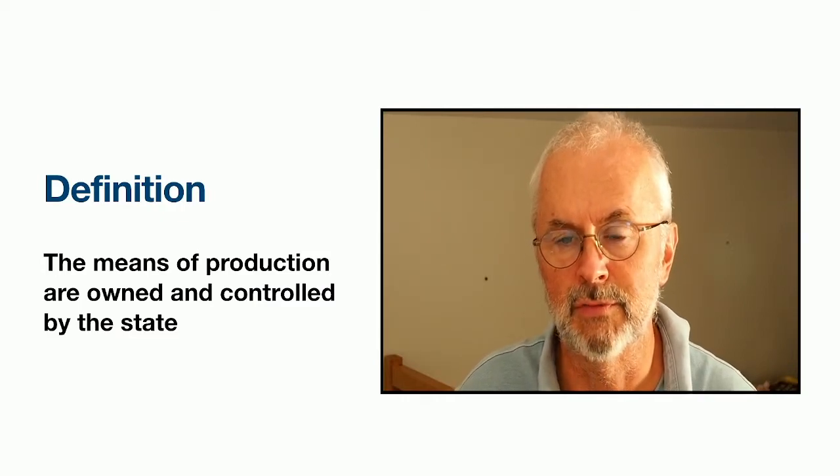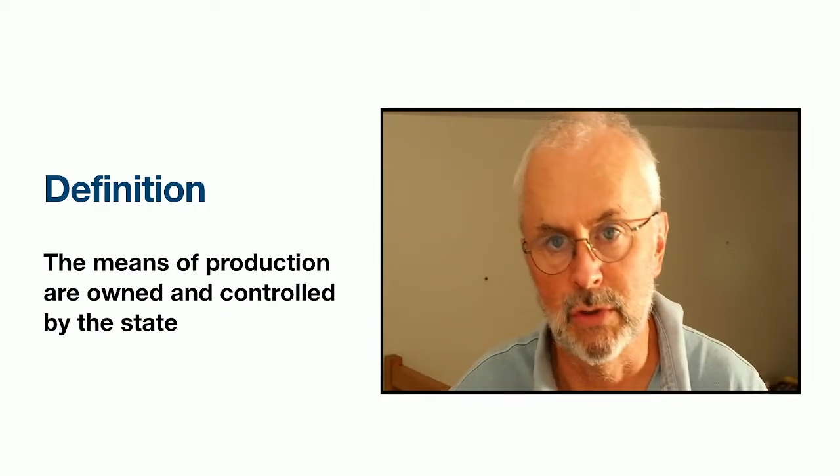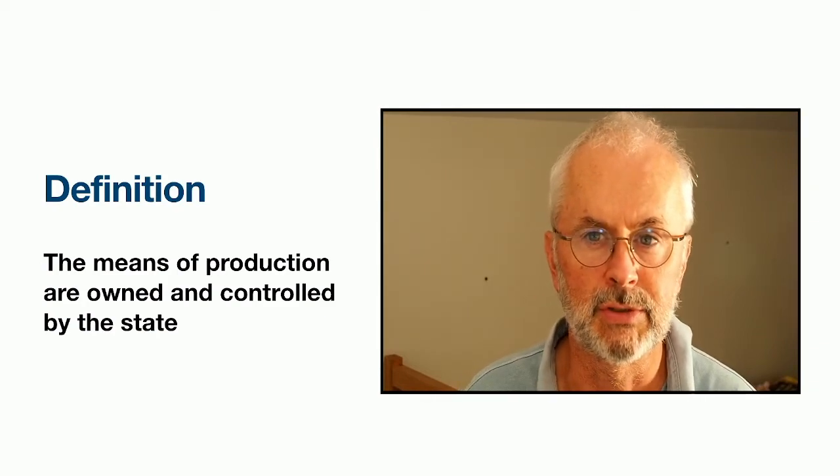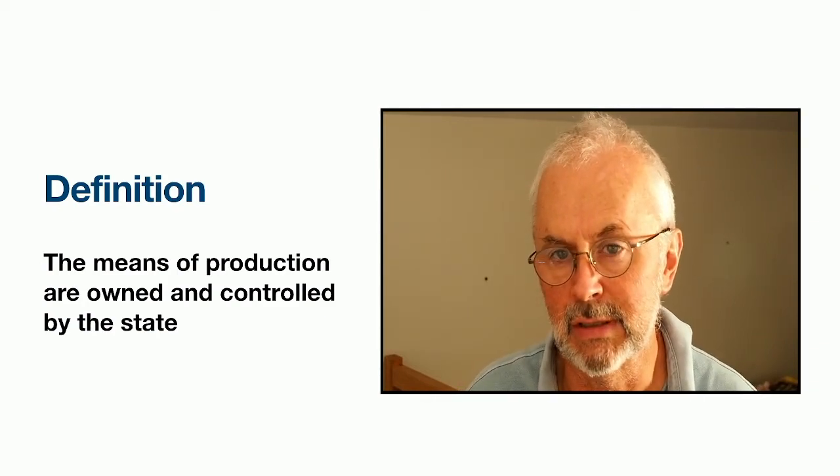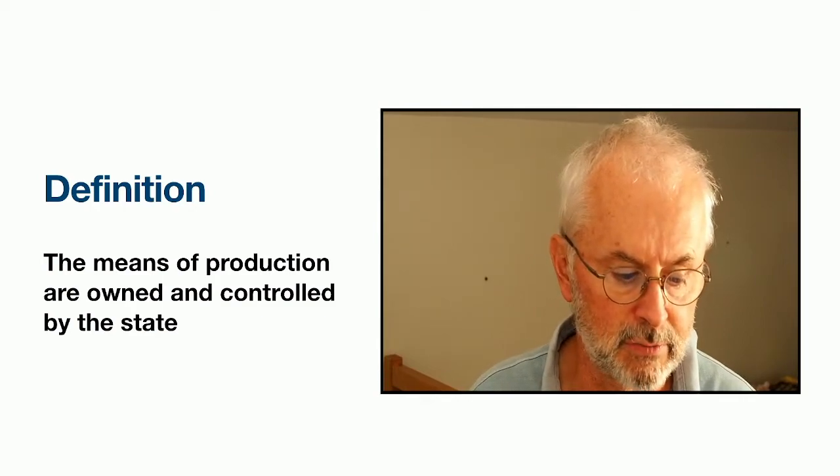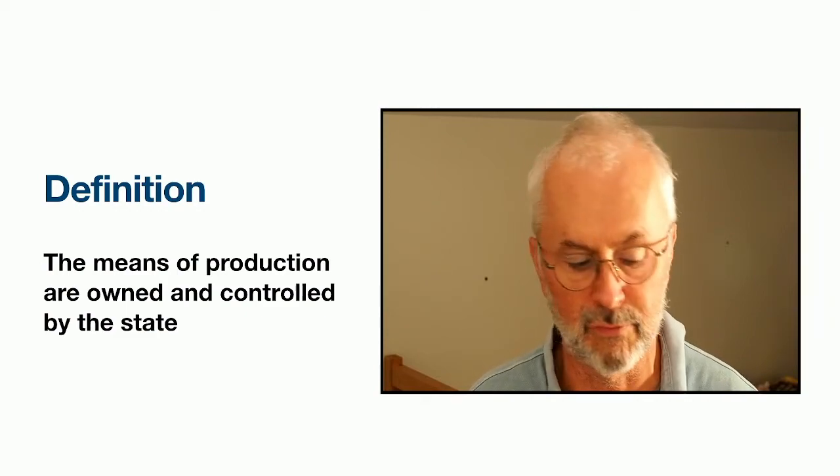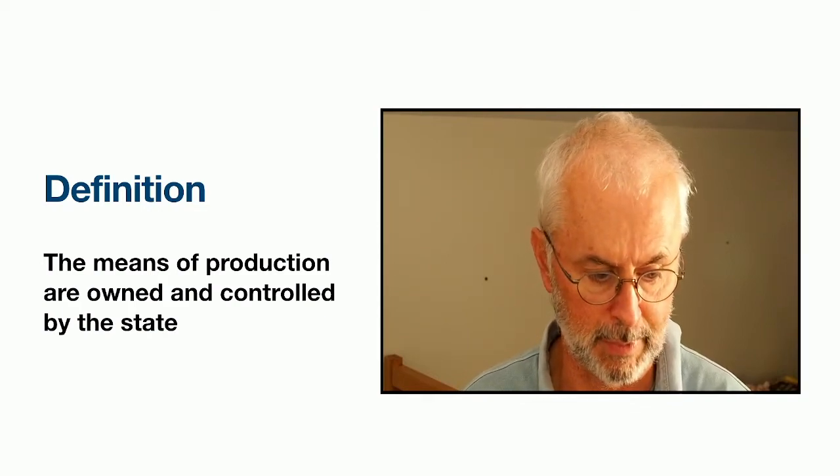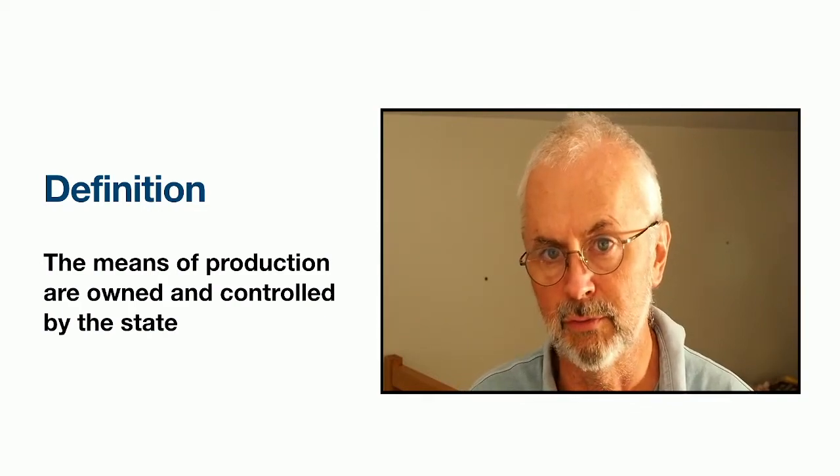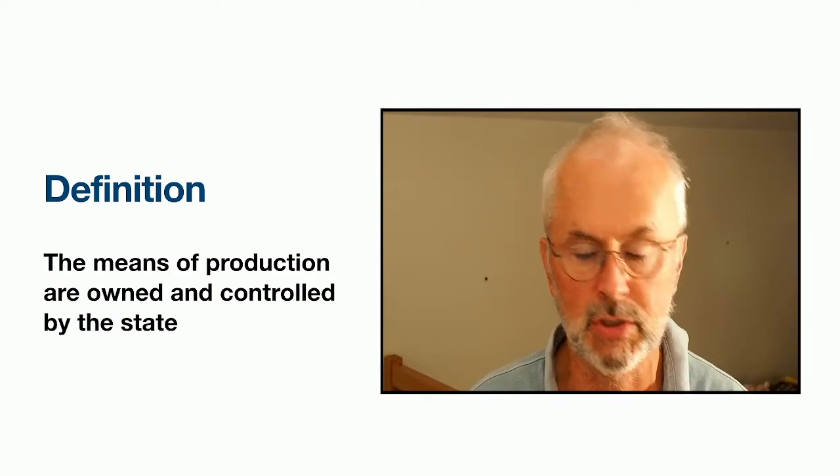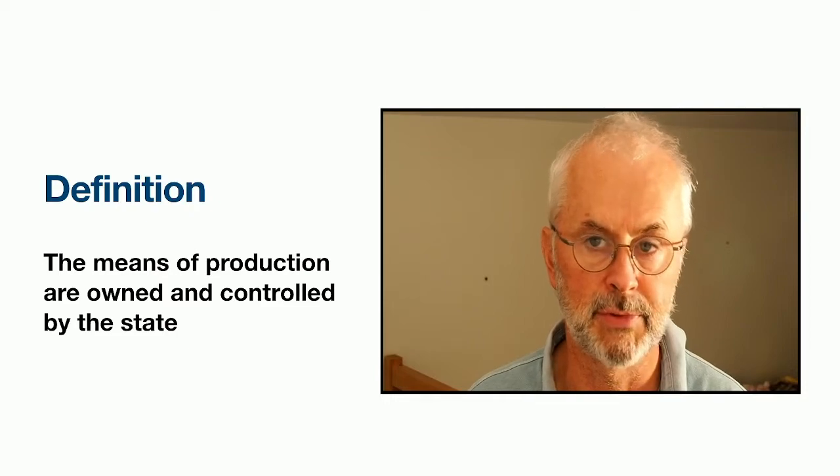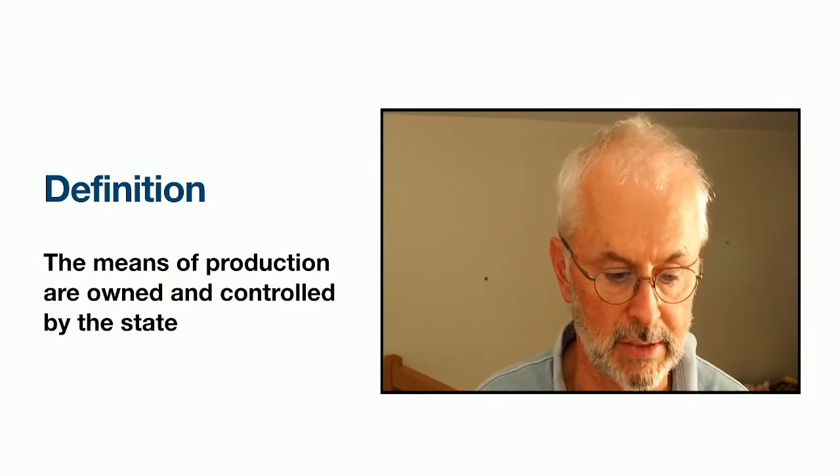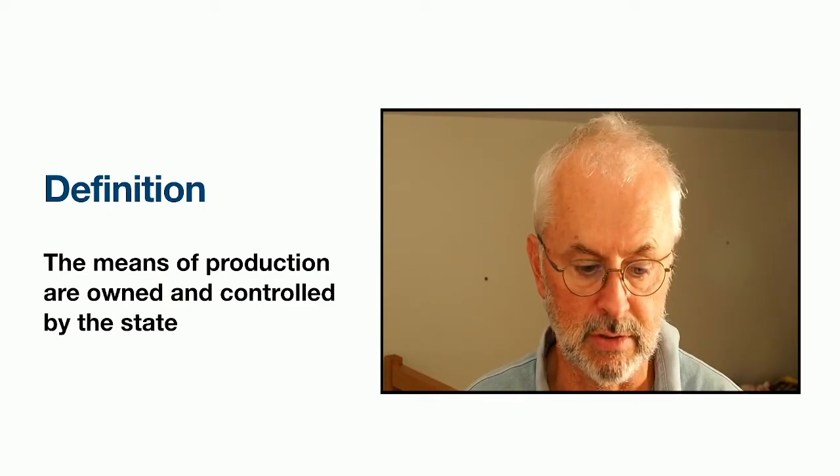Let's arrive at a basic definition. I've looked at a range of different definitions from major dictionaries. The shortest one is that the means of production are owned and controlled by the state. All real socialist forms of government have that in common. A system or condition of society in which the means of production are owned and controlled by the state with the purpose of equal distribution according to need.